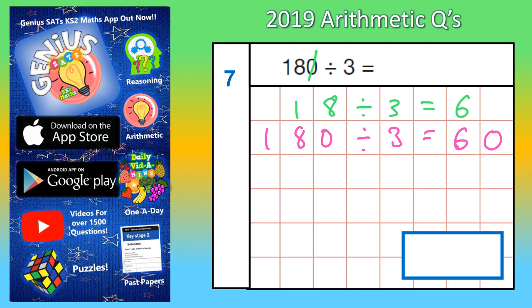Now obviously the other way you could do that — the final answer is 60 — is to double check that with a bus shelter division. So divide 180 by 3, and this is what we get.